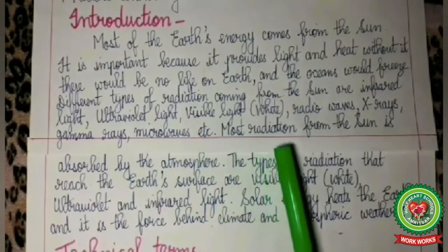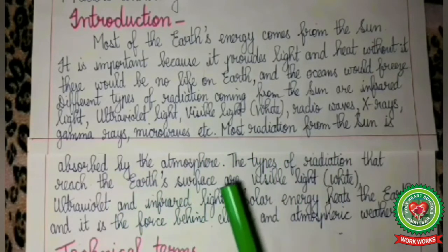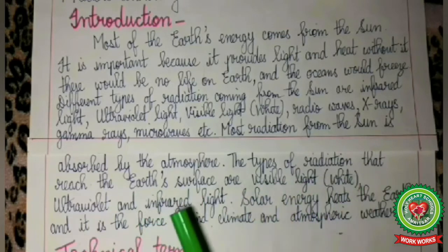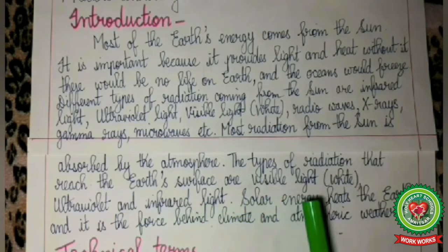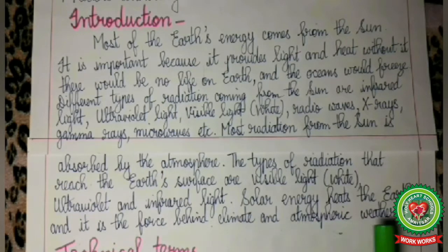Most radiation from the sun is absorbed by the atmosphere. The types of radiation that reach the earth's surface are visible light, ultraviolet, and infrared light. Solar energy heats the earth and it is the force behind climate and atmospheric weather.